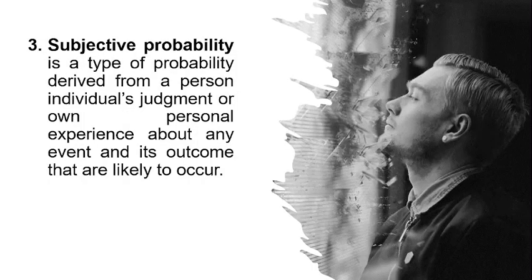The third type is subjective probability. As its name shows, it is related to subjective judgment, experience, and feelings of individuals. It is a type of probability derived from a person's individual judgment or own personal experience about any event and its outcome that are likely to occur.